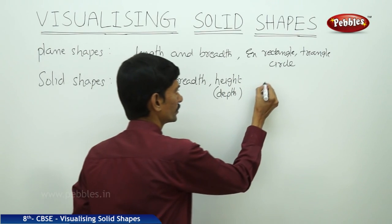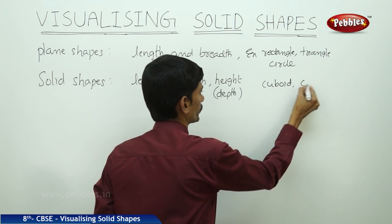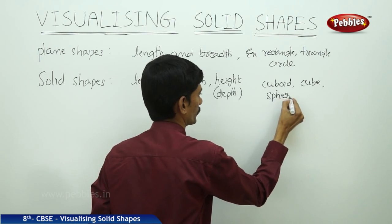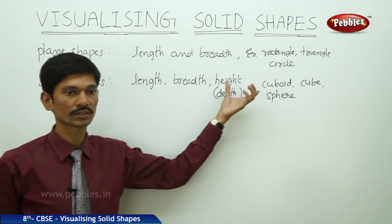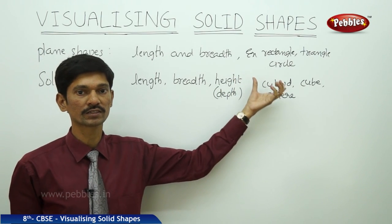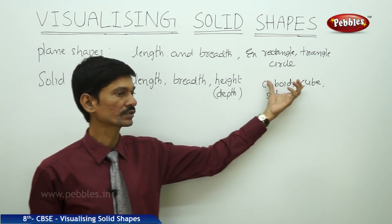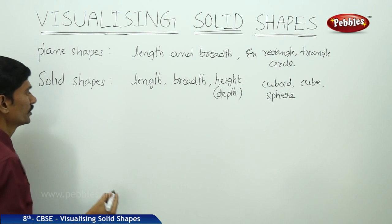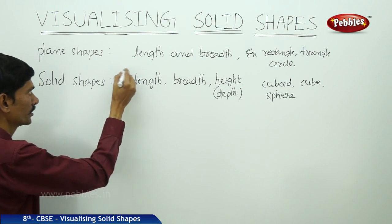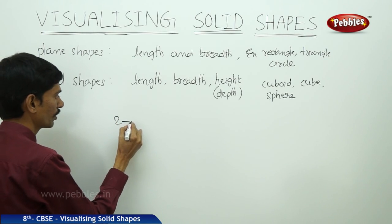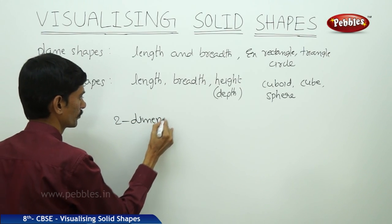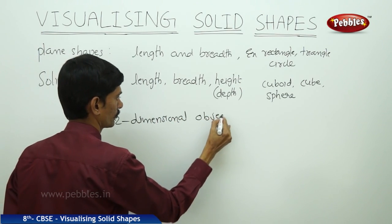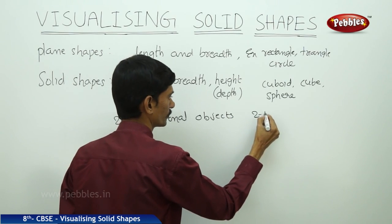Whereas the cuboid, cube, and sphere — these objects have three dimensions: length, width, as well as height. So these objects are called solid objects or solid shapes. The plane shapes have only two dimensions, so these plane shapes are called two-dimensional objects, or simply 2D objects.